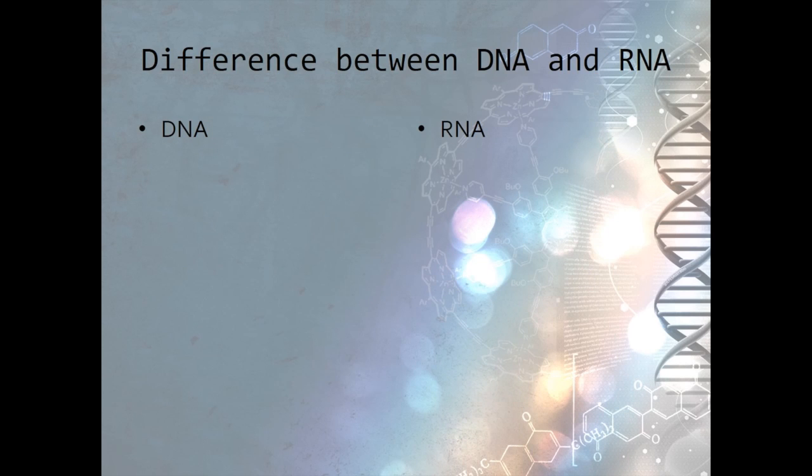Before we go any further into the formation of proteins, let's take a minute to learn more about RNA, or ribonucleic acid, and how it's different from DNA. Remember that DNA is made up of two strands of nucleotides, but RNA has only one strand. We notice another difference just by paying attention to the names. Deoxyribonucleic acid contains the sugar deoxyribose, while ribonucleic acid contains the sugar ribose.